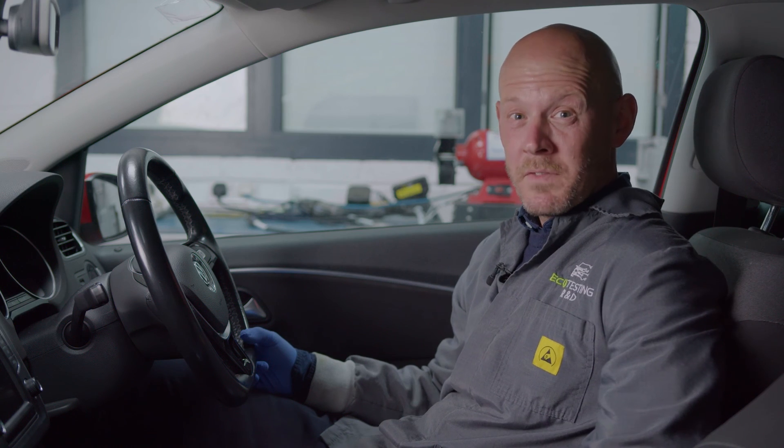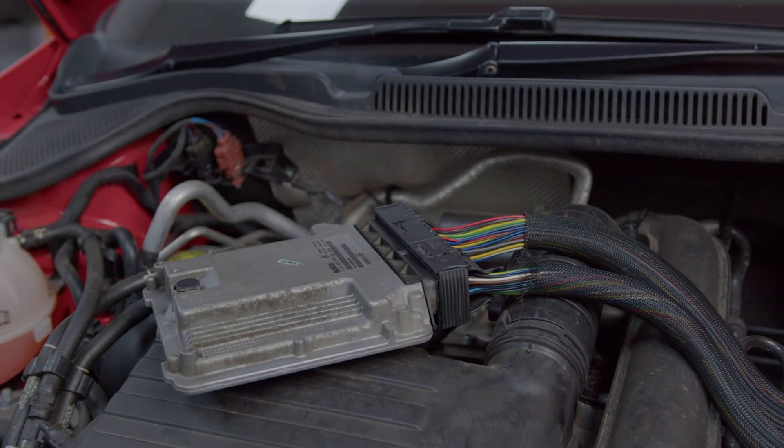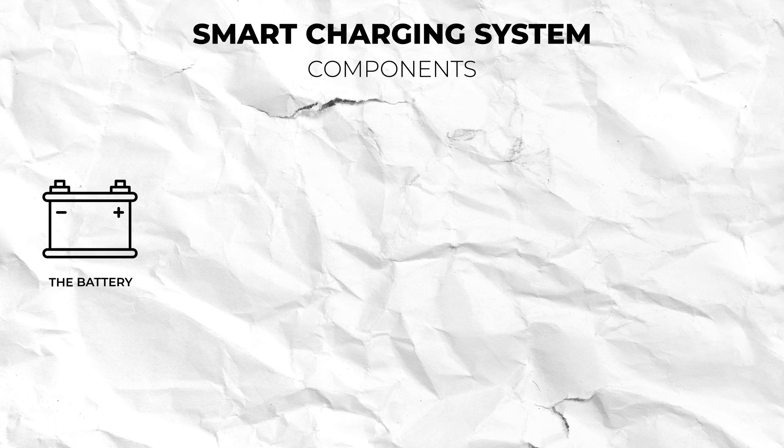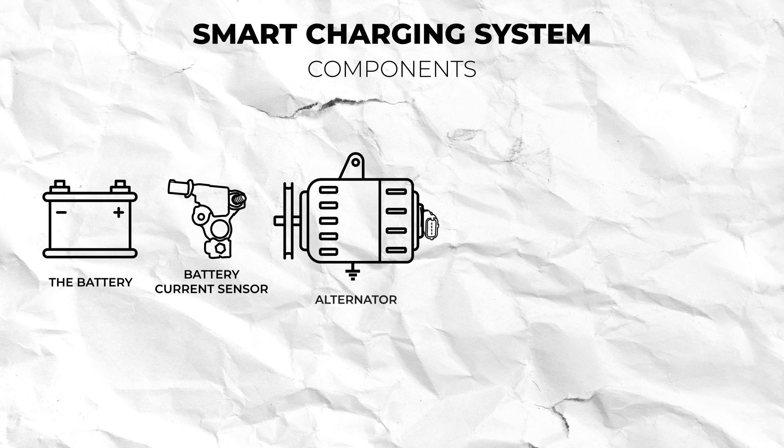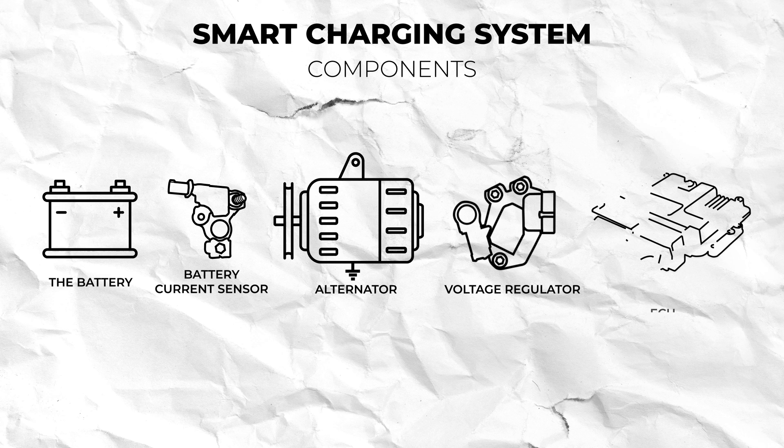However most modern vehicles have an ECU controlled smart charging system where the basic components are the battery, battery current sensor, alternator, voltage regulator and ECU.